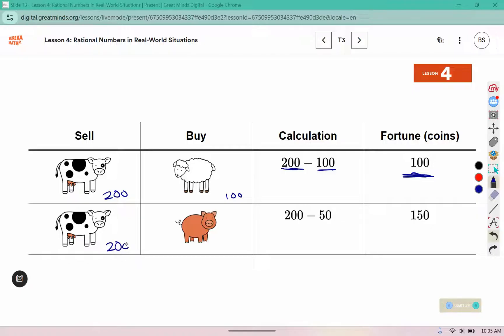Here the pig was 200, sorry, the cow was 200 and the pig was 50. So 200 is what they earn from selling the cow, and 50 is how much they pay for buying the pig, which leaves them with 150.